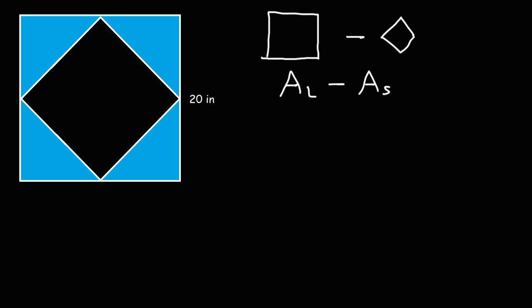We know the side length of the larger square is 20, and the area of a square is side squared, s times s. So the area of the larger square is 20 squared. Now what we need to do is find the side length of the smaller square, so how can we find X?